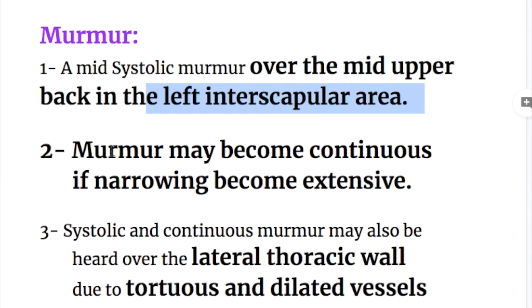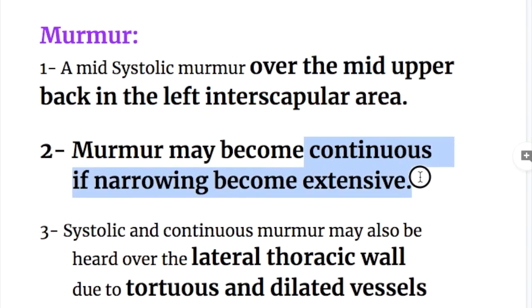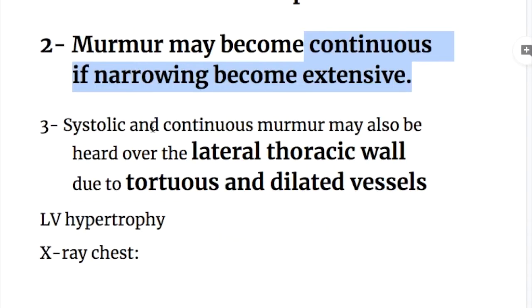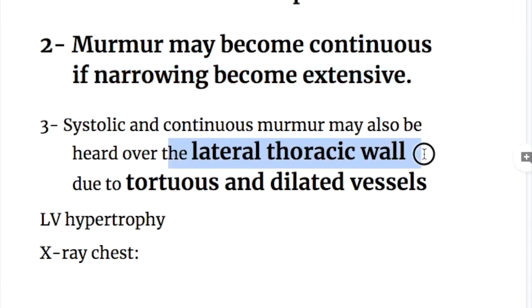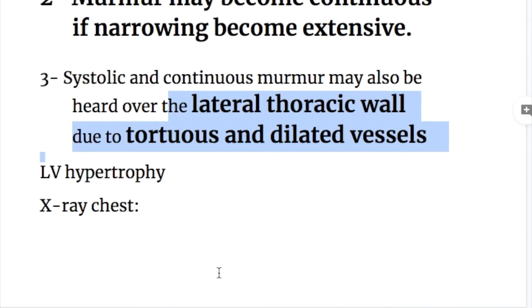Number two, the murmur may become continuous if the narrowing is extensive. Number three, a systolic and continuous murmur may also be heard over the lateral thoracic wall due to tortuous and dilated blood vessels.